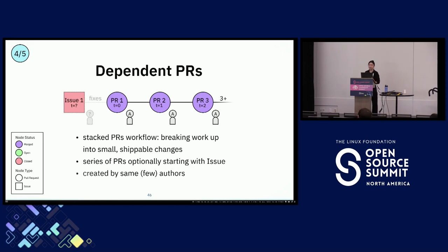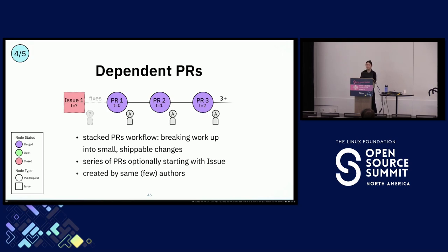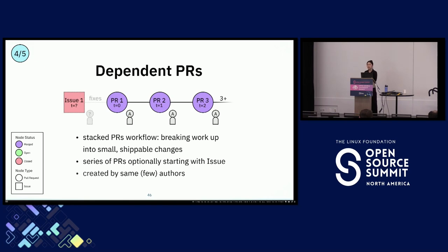Stacked PRs is a workflow where instead of making one giant feature PR, you break your work up into smaller chunks and submit individual PRs with maybe one commit each. For example, I might make a back-end PR, then submit a front-end PR that depends on it, and then a localization PR that depends on the front-end. This is captured in our dependent PRs workflow type, which has PRs created one after another in a chain, usually by a single author. Dependent or stacked PRs are regarded as a good practice in the industry because they make code review easier with small, single-commit PRs, they're independent, and they don't block development—developers can continue working on later PRs without waiting for earlier ones to be reviewed.